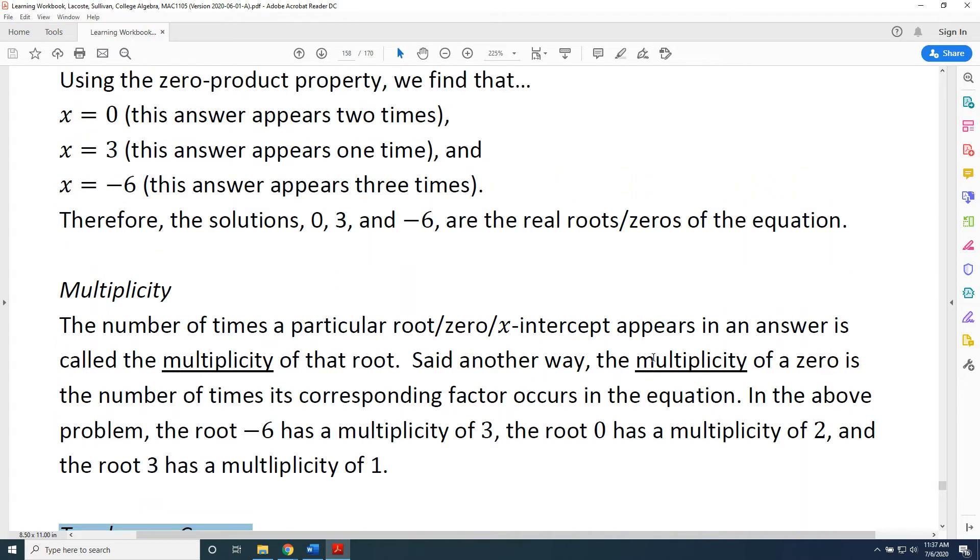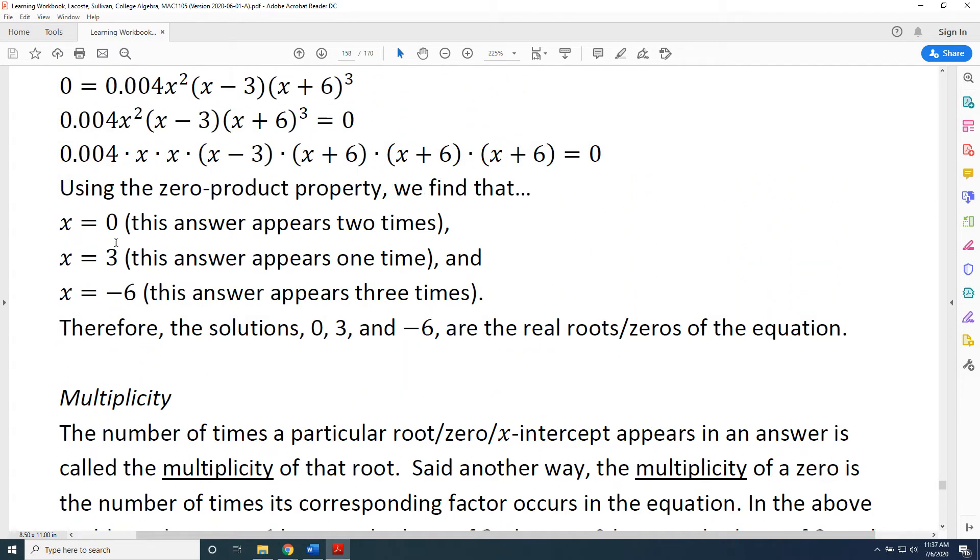So as a brief reminder, I'd like to point out that 0 was the only root that we had with 2 as its multiplicity, which is an even number. 3 and negative 6 were roots that had an odd multiplicity, 1 time and 3 times respectively.